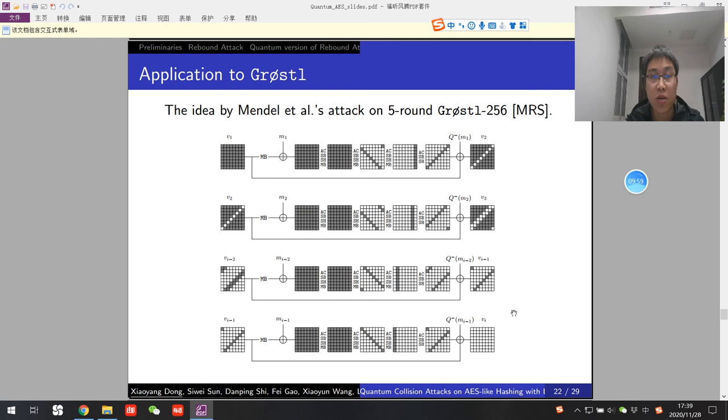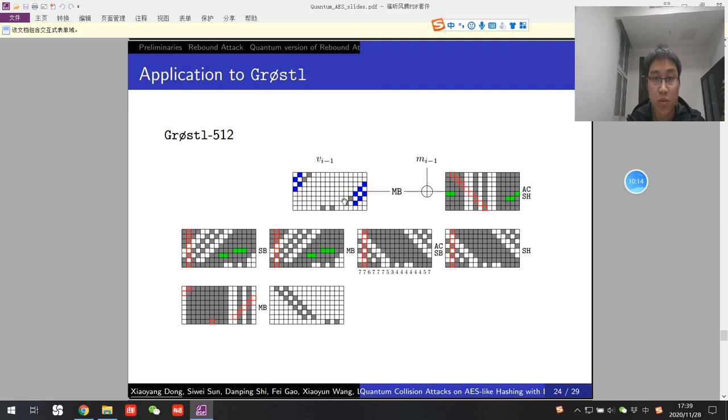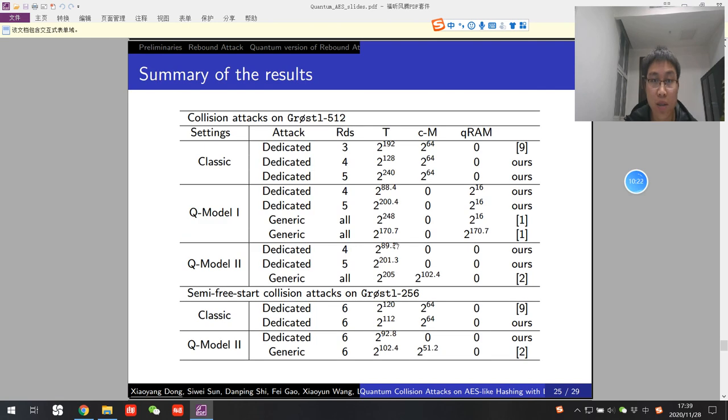We also applied our algorithm to Grøstl. For Grøstl-512, we find new paths, inbound paths, to perform the attacks. At last, we give 4-round and 5-round classical attacks, which is better than previous 3-round attacks. And also, we convert the rebound attacks into quantum attacks.